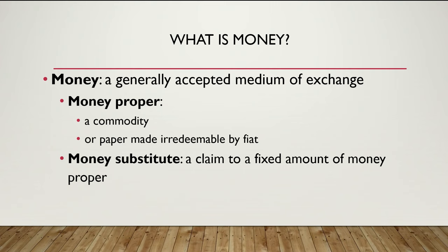You've got money proper, and today we want to focus more on money substitutes — a claim to a fixed amount of money proper. Examples include banknotes and bank deposits. This really constitutes the largest component of the money supply. A banknote that says 'we'll pay the bearer on demand $5 or one ounce of gold' — that banknote is a money substitute. The gold it's paying to the bearer on demand is money proper. Very often now, when we think about money proper, we just think of dollar bills, to the extent most people even use cash anymore.